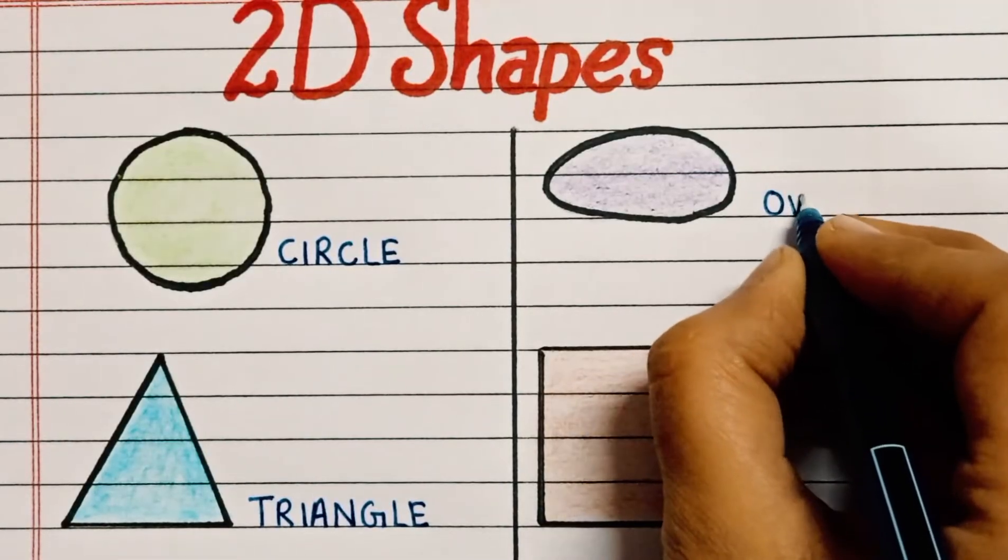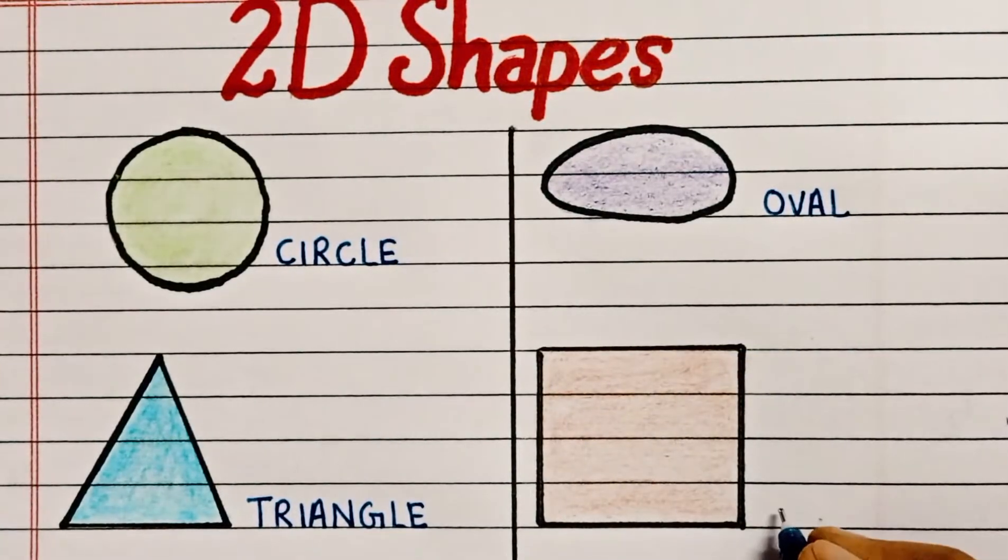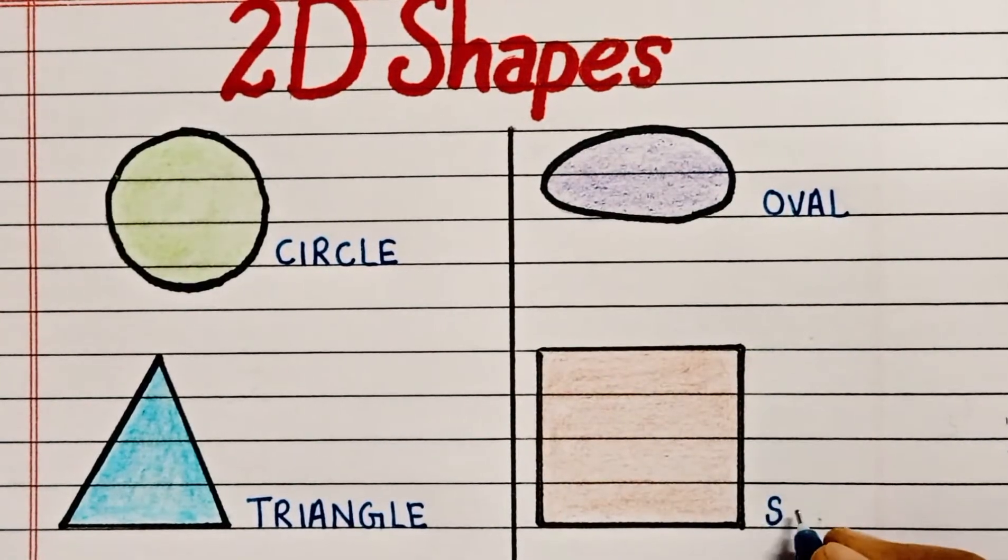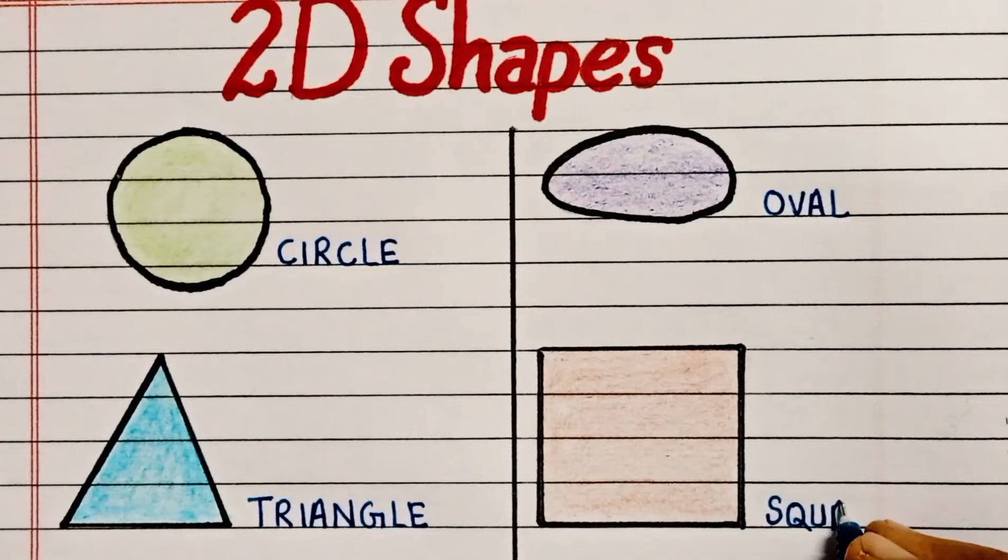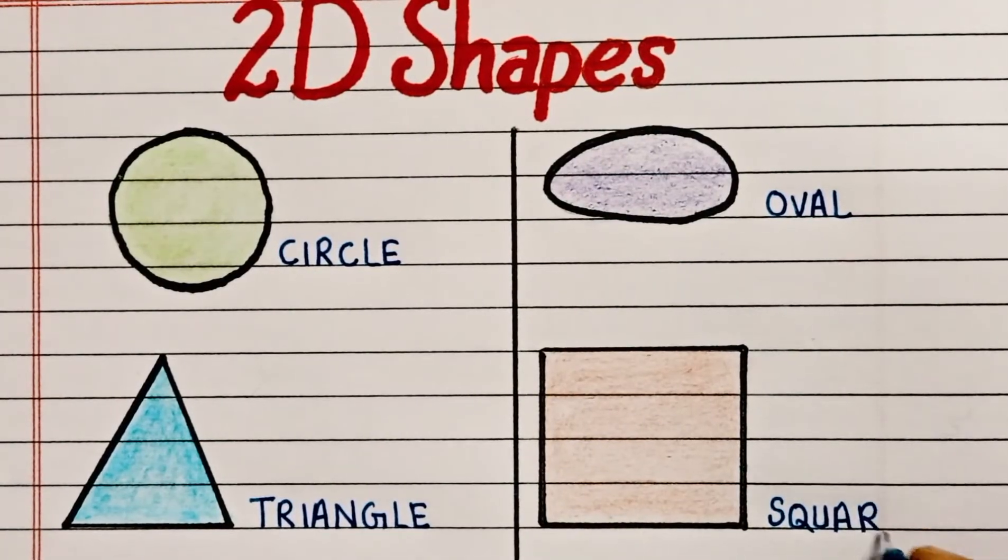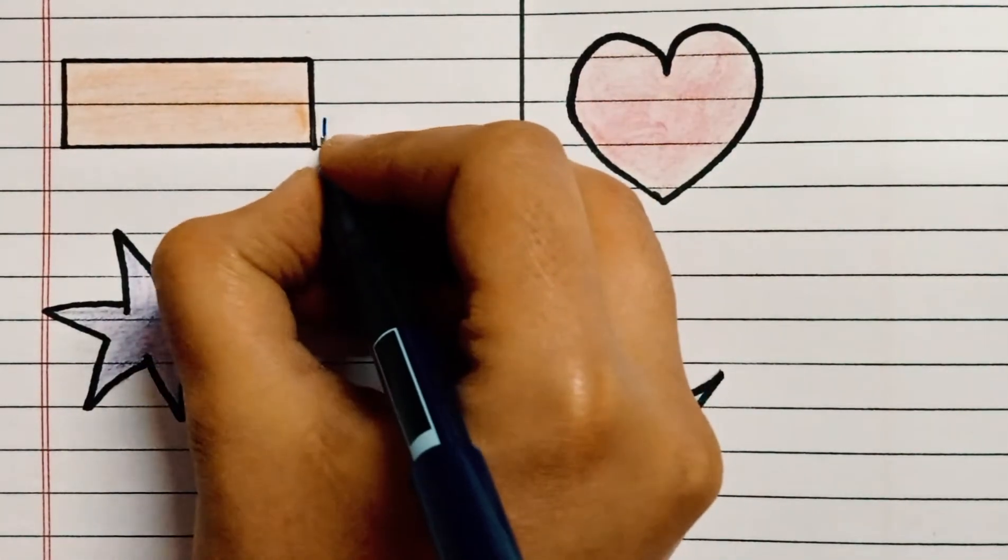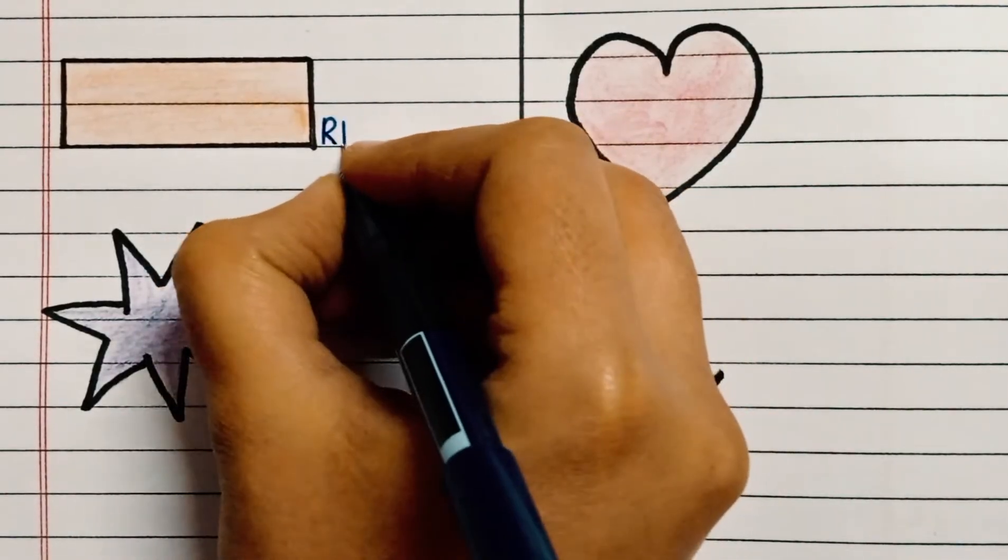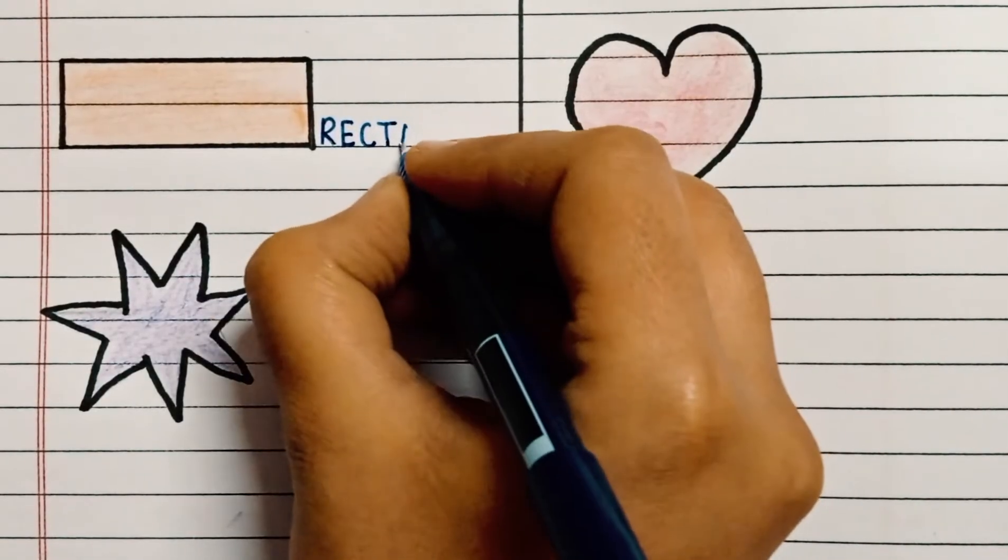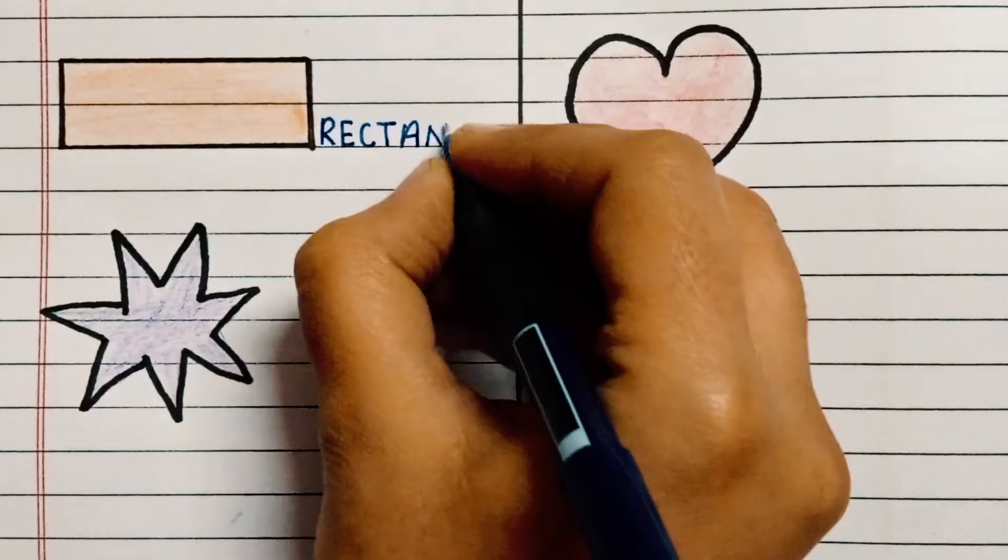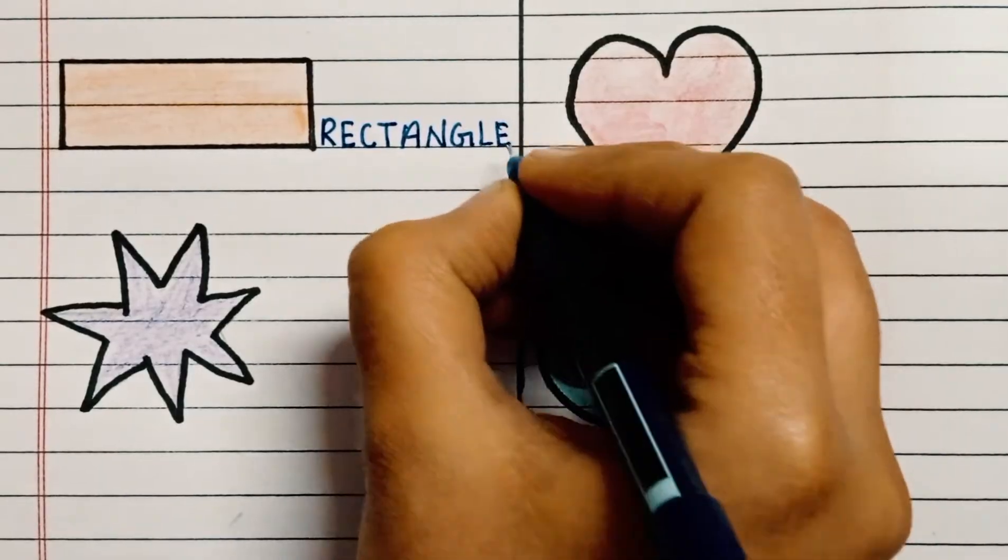O-V-A-L, Oval. S-Q-U-A-R-E, Square. R-E-C-T-A-N-G-L-E, Rectangle.